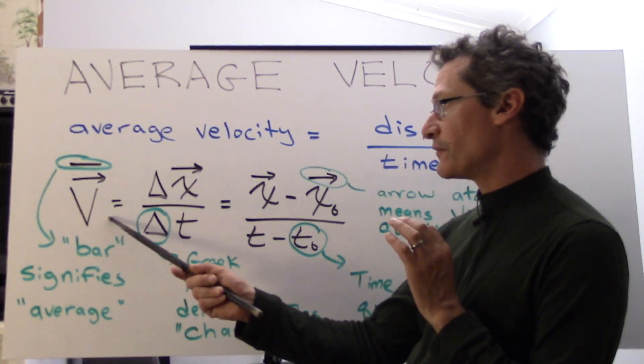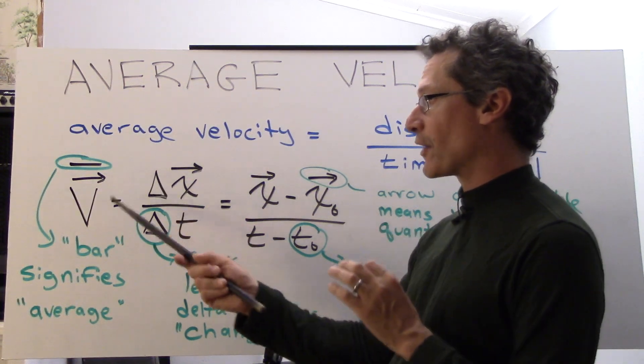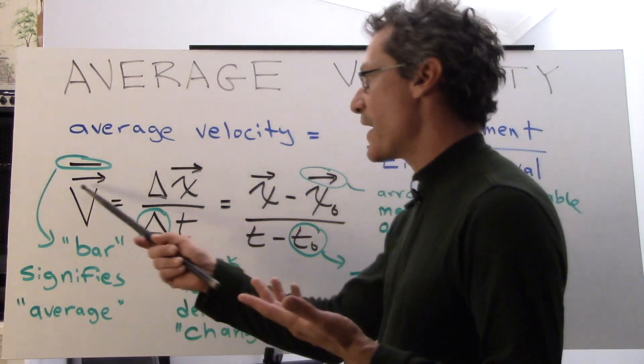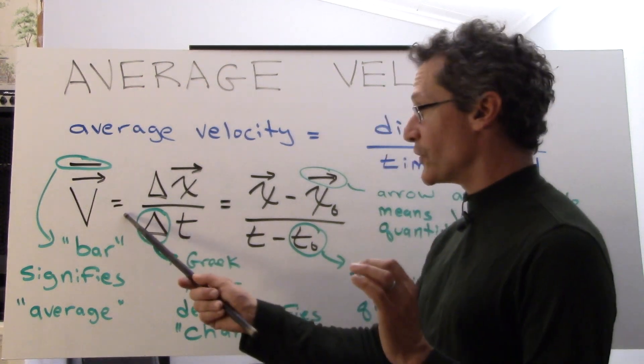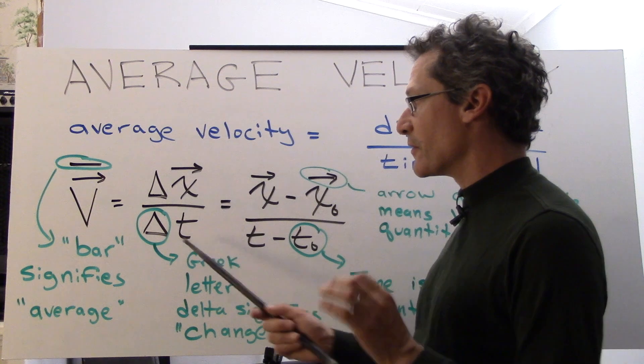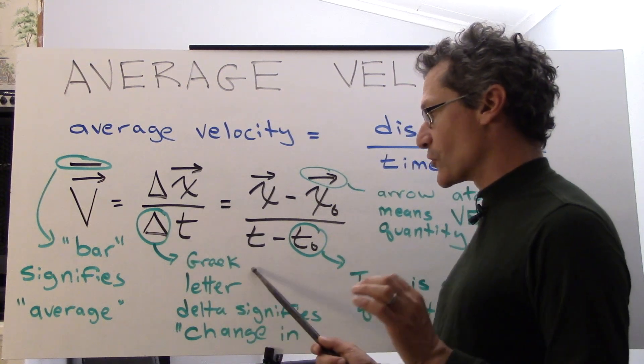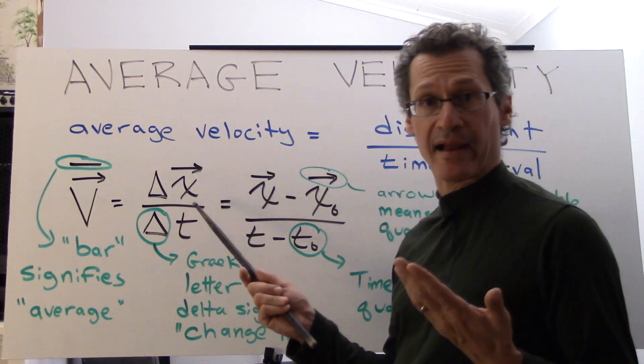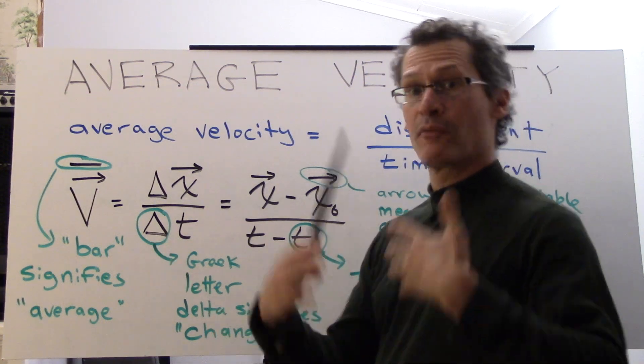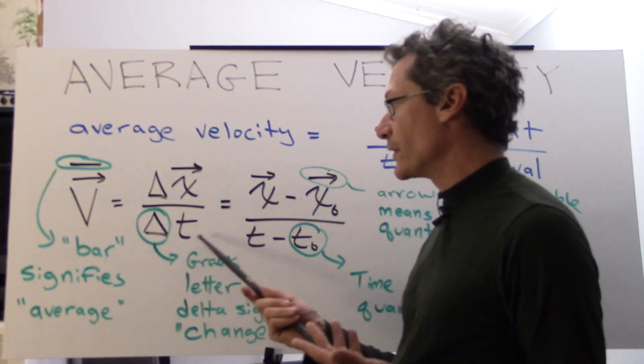So mathematically it looks like this. We have v and I'm going to call it v bar. The bar signifies average and notice the vector notation, the arrow above the v. It's equal to delta x over delta t. Remember the delta is the Greek letter that signifies change in. So it's the change in x or your position which is called displacement over change in time.